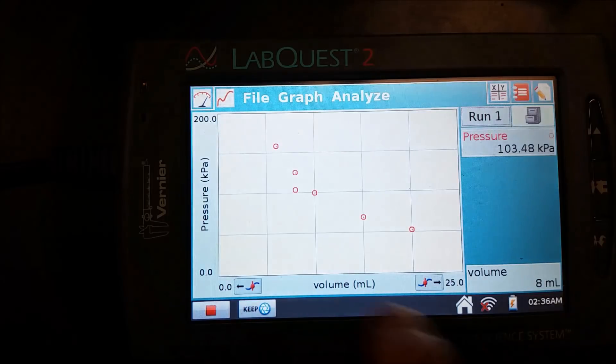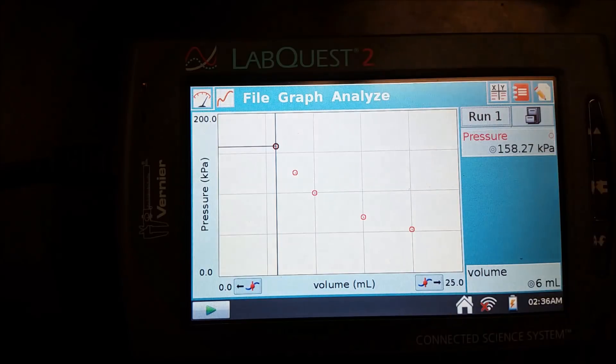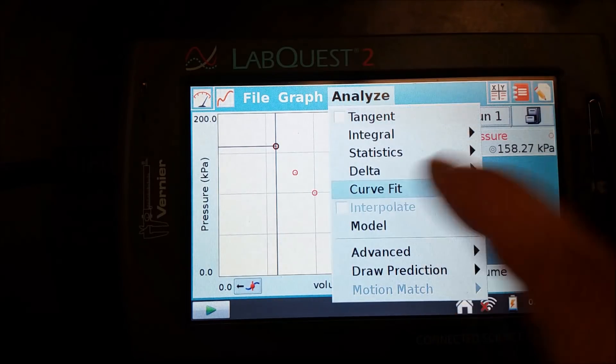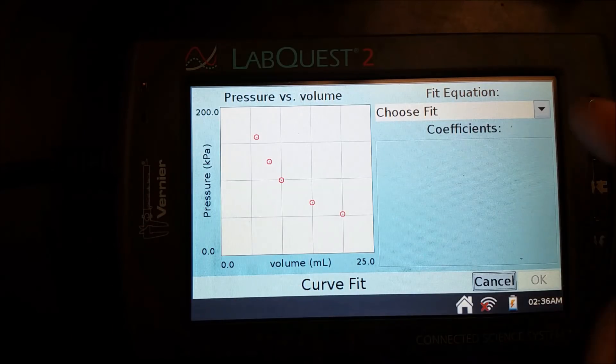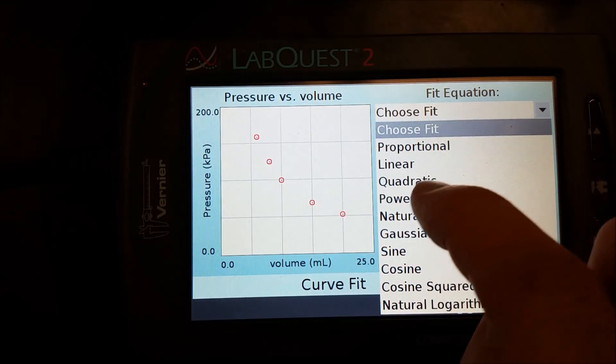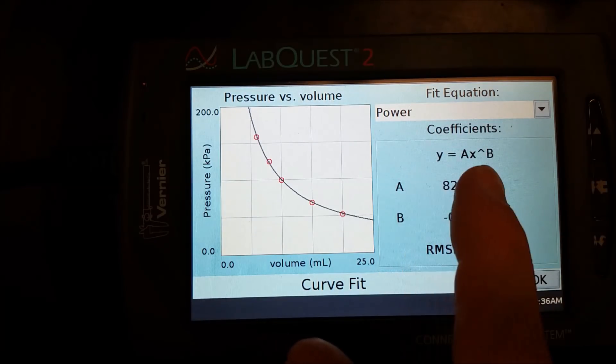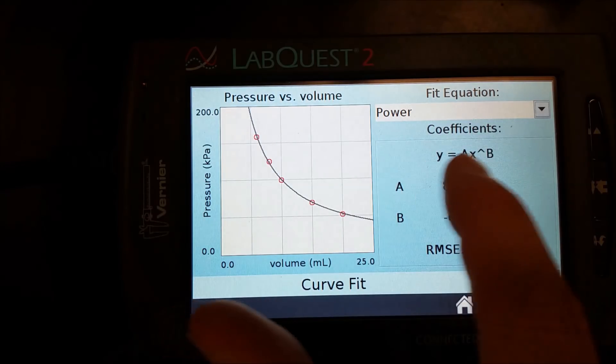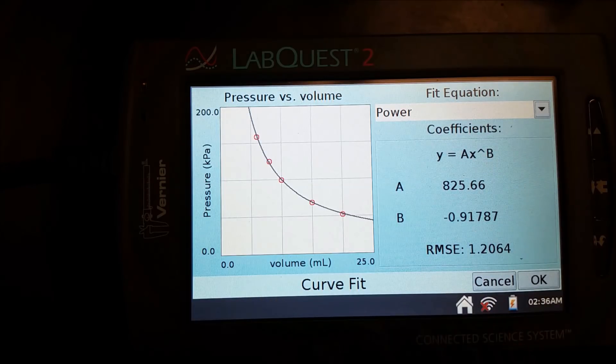So now we have all of our pressure and volumes. We're going to go ahead and stop. And we're going to do our analysis. And this one has a little more complicated analysis. So when we go to analyze and curve fit, we're going to select our pressure volume. So pressure on the y and volume on the x. And for our curve fit, we're going to go with the power. And so that gives us y equals constant times—so y is pressure in this case. So pressure is equal to a constant times volume raised to some power. And so we end up with a curve like this. And from there we can do our analysis.